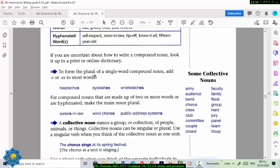To form the plural of a single word, compound noun, add S or ES to the most words. For example, headache becomes headaches. Eyelash becomes eyelashes. Wristwatch becomes wristwatches. For compound nouns that are made up of two or more words or are hyphenated, you make the main noun plural. So you add the S in sisters. So instead of saying sister-in-law, you say sisters-in-law. Wind chimes, public address systems. So you add the plural suffix to the main word.